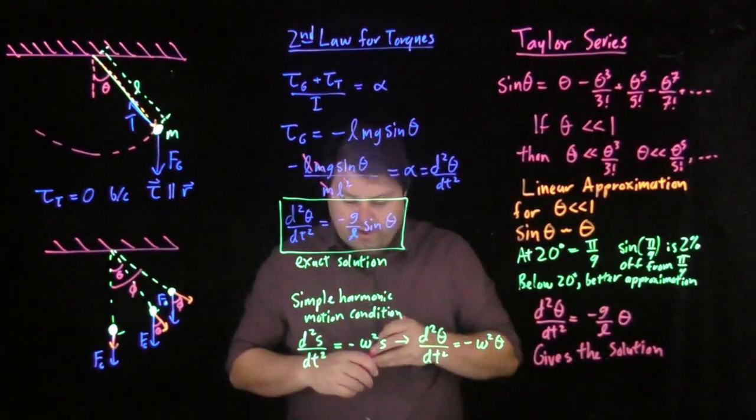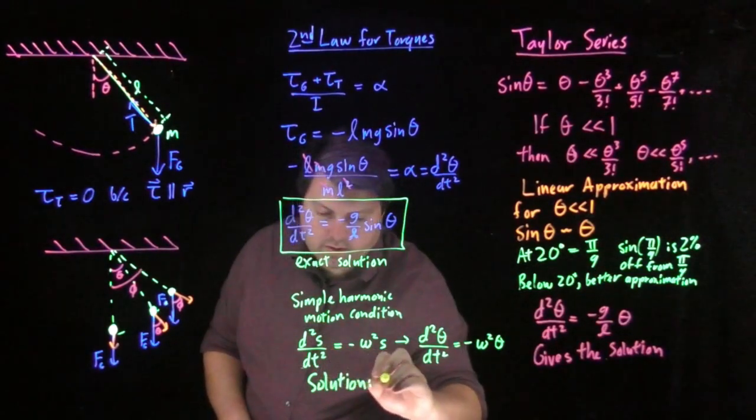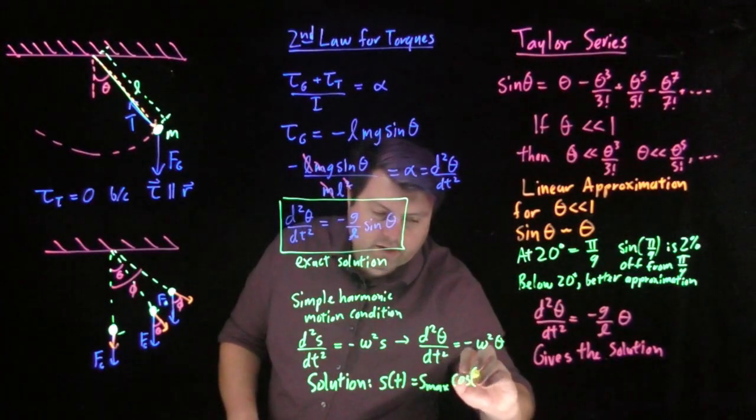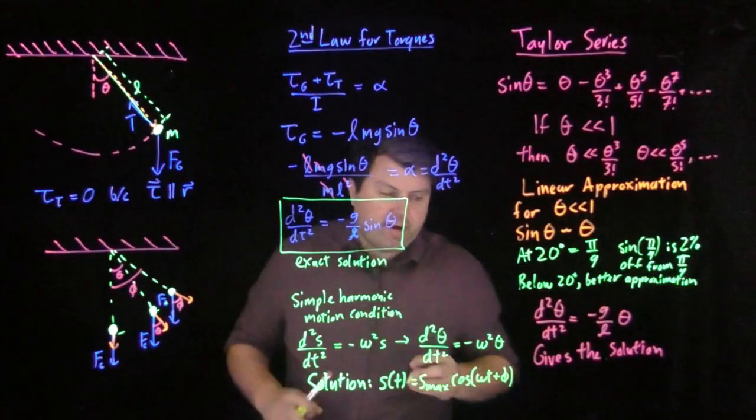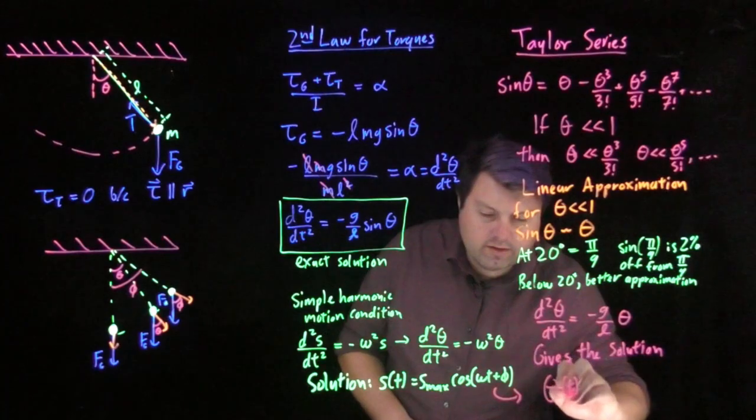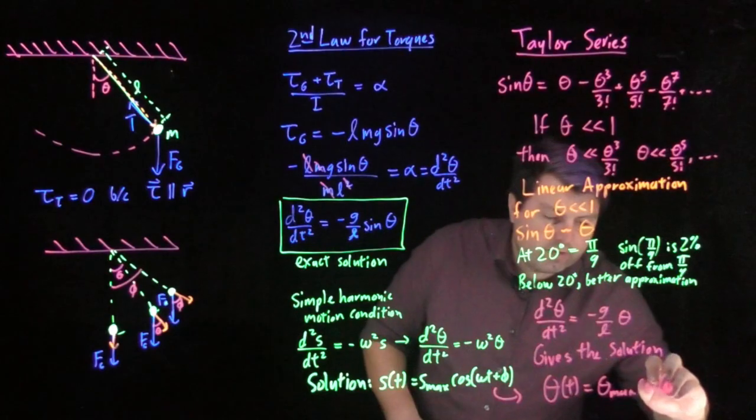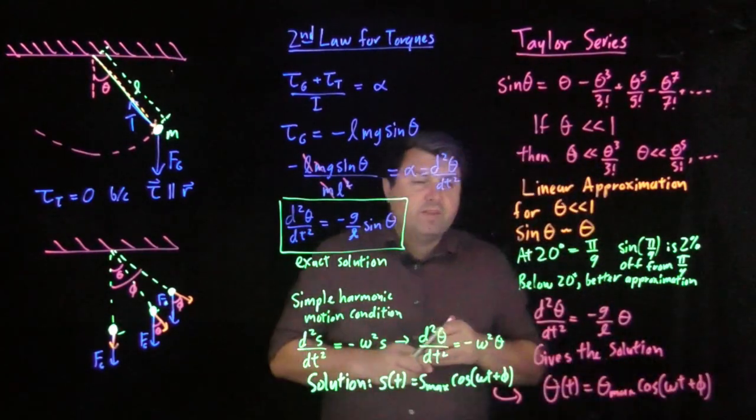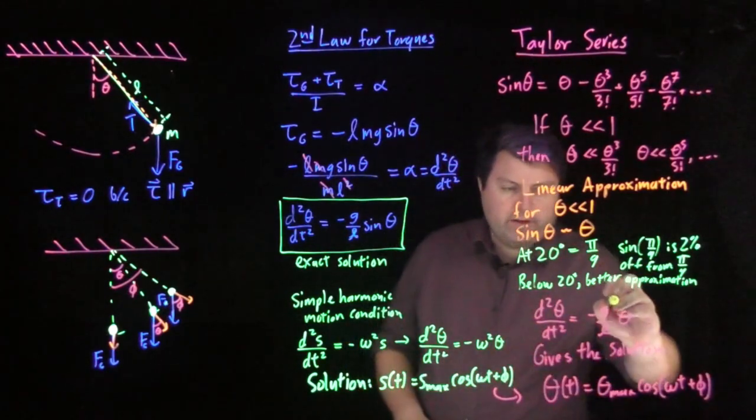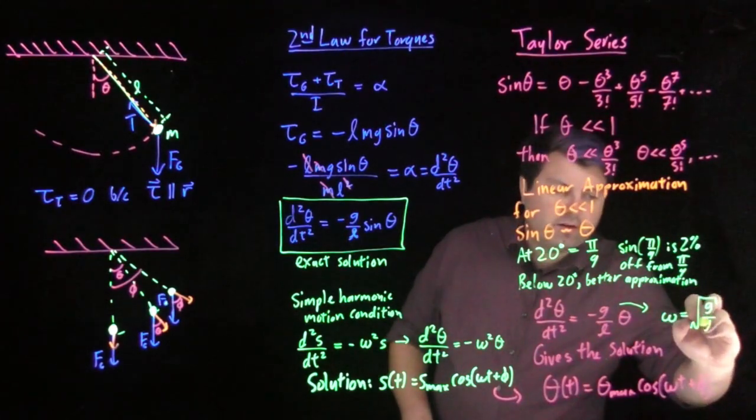Then our simple harmonic motion condition is that the solution is s as a function of t is s max times cosine of omega t plus phi. So in this case, our solution is going to be theta of t equals theta max cosine of omega t plus phi. And we know that this g over l is equal to omega squared, so we get from this that omega is the square root of g over l.